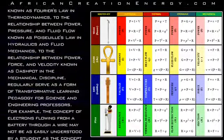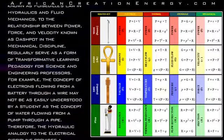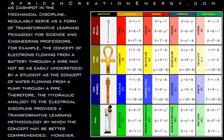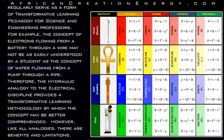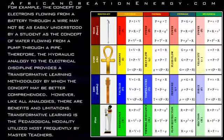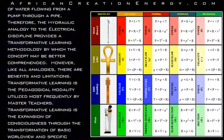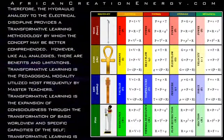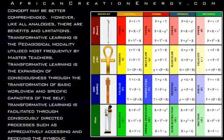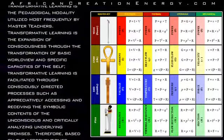For example, the concept of electrons flowing from a battery through a wire may not be as easily understood by a student as the concept of water flowing from a pump through a pipe. Therefore, the hydraulic analogy to the electrical discipline provides a transformative learning methodology by which the concepts may be better comprehended. However, like all analogies, there are benefits and limitations. Transformative learning is the expansion of consciousness through the transformation of a basic worldview and specific capacities of the self. Transformative learning is facilitated through consciously directed processes such as appreciatively assessing and receiving the symbolic contents of the unconscious and critically analyzing the underlying premises.